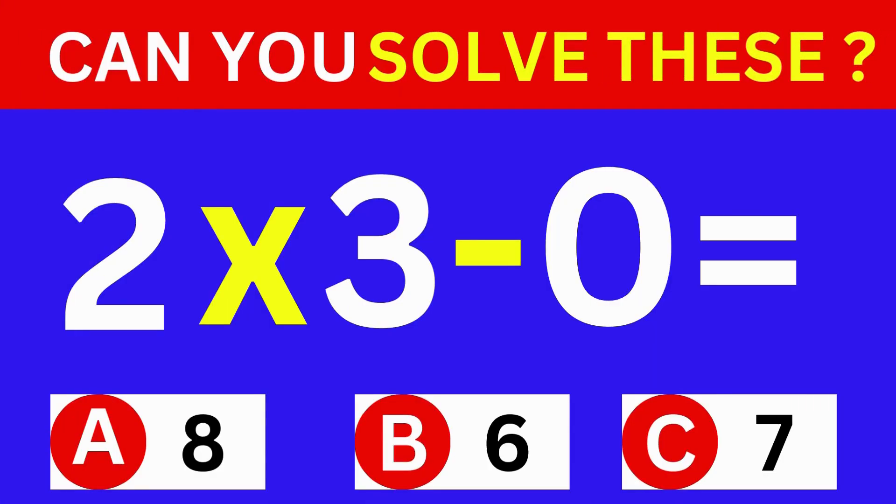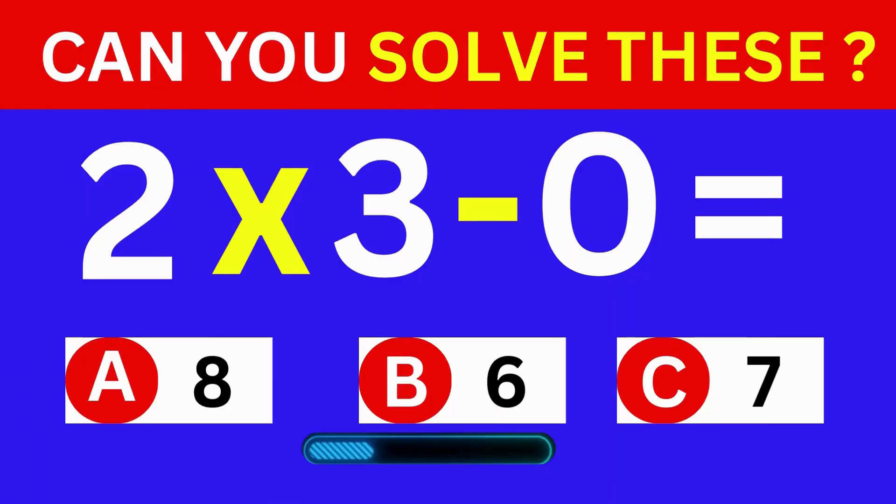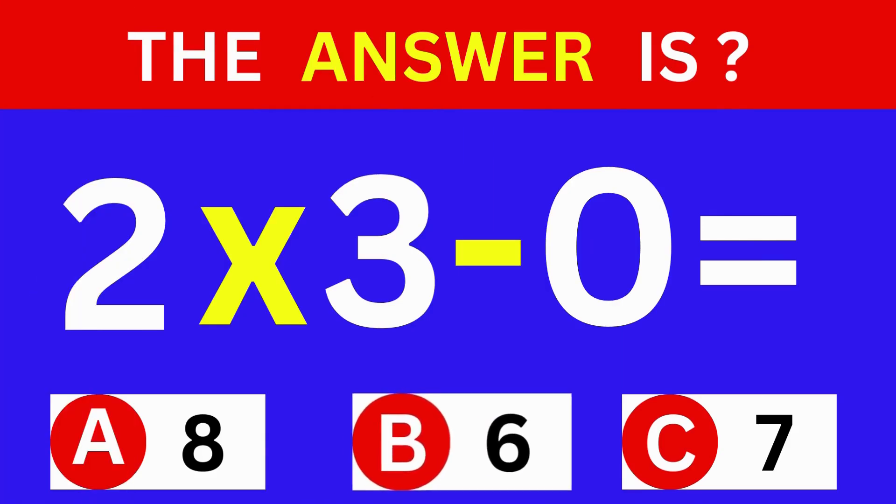2 times 3 minus 0 equals. A. 8. B. 6. C. 7. The answer is Option B. 6.